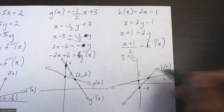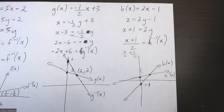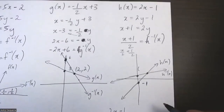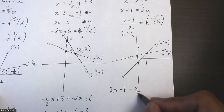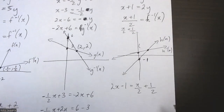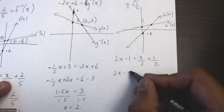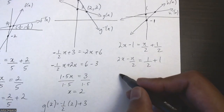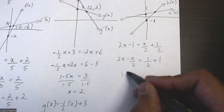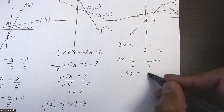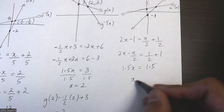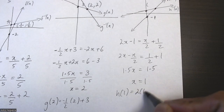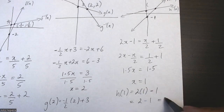The intersection point is where I equate the original and inverse: 2x minus 1 equals x/2 plus 1/2. Moving terms: 2x minus x/2 equals 1/2 plus 1, giving 3/2 x equals 3/2, so x equals 1. Substituting into the original: h(1) equals 2 times 1 minus 1, which is also 1. The intersection point is (1, 1).